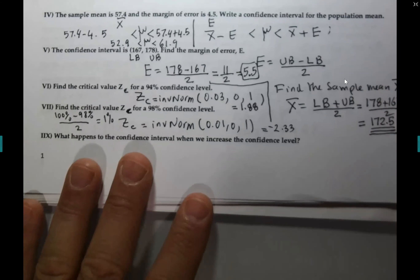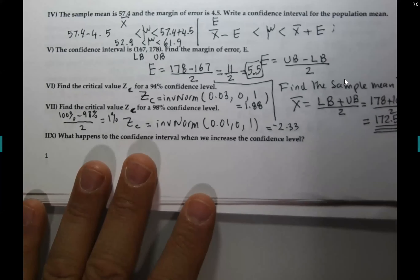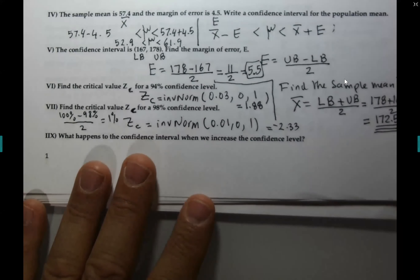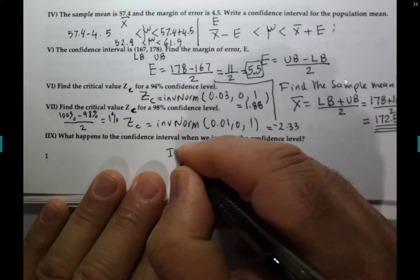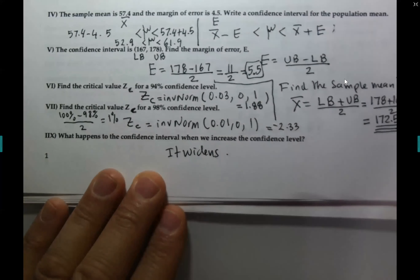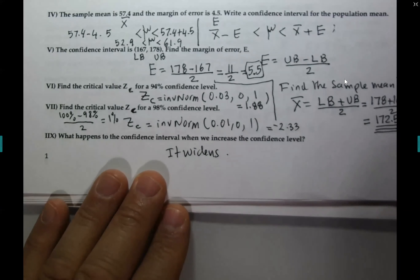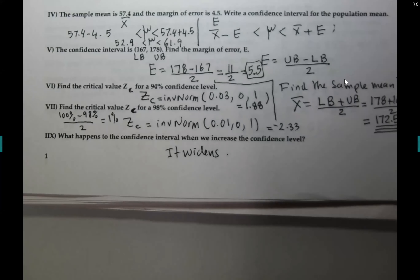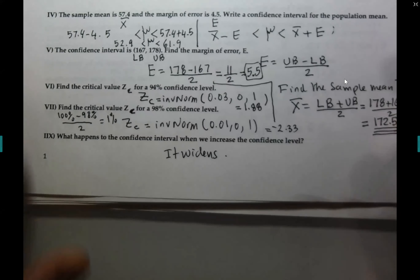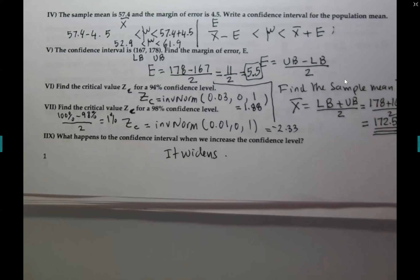What happens to the confidence interval when we increase the confidence level? It widens. Increasing the confidence level comes at a cost — the interval gets wider, and when it is very wide, the true value gets lost among too many choices.